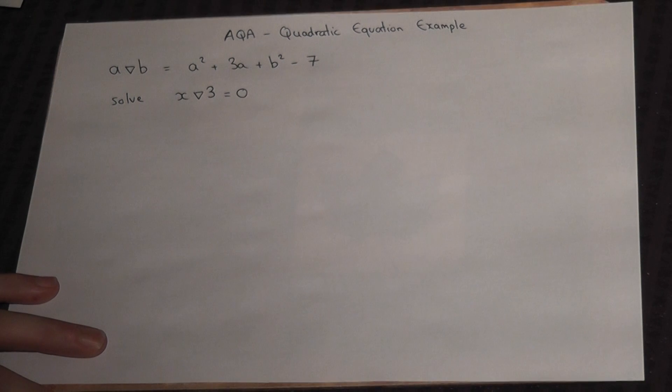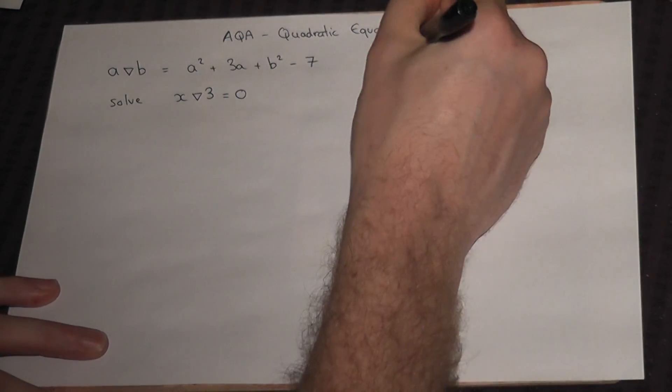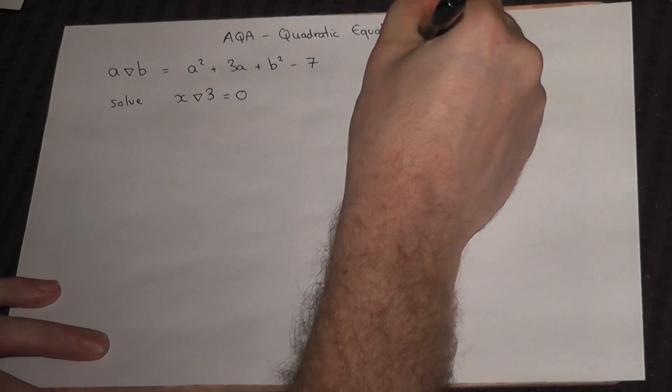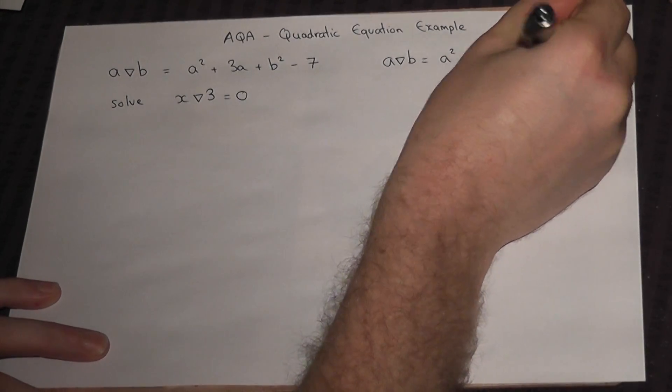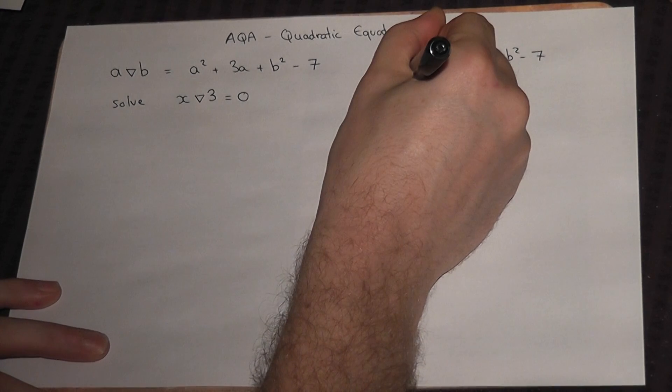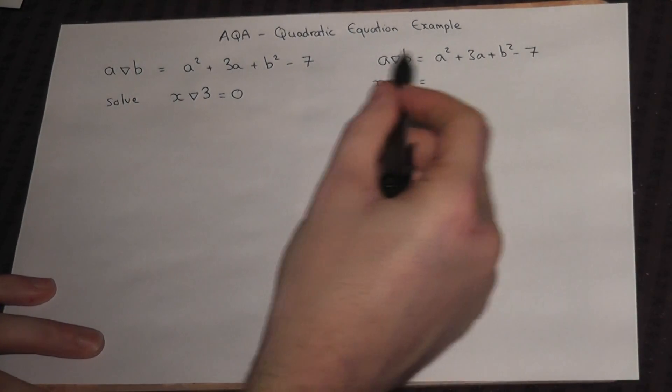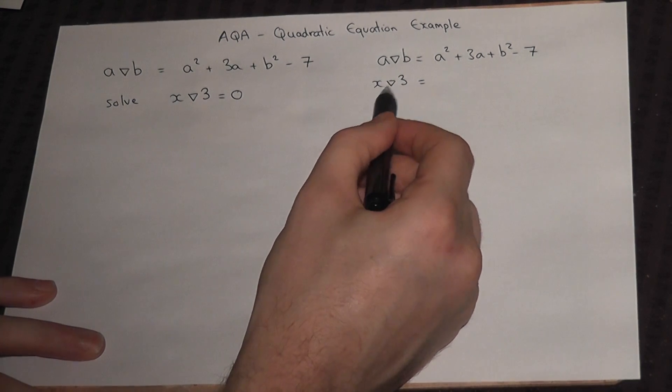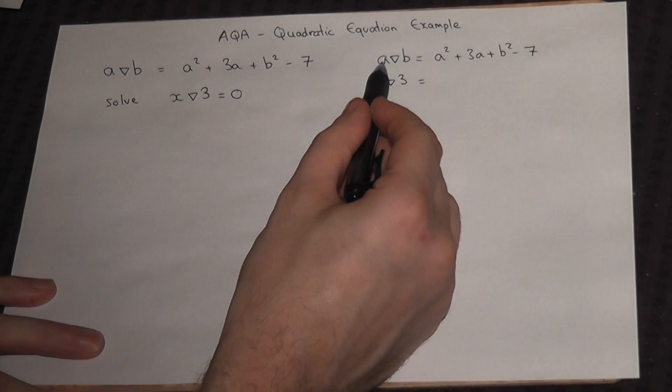Now the trick here is as follows. Let's rewrite this over here. I'm underneath and I'm going to write down the question x triangle 3. Now the trick here is to rewrite this with A replaced by x and B replaced by 3. So A is x, B is 3.